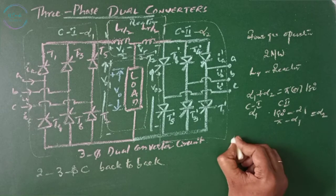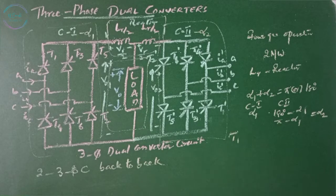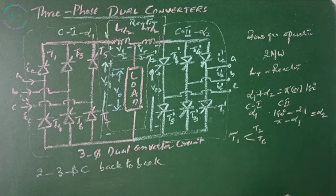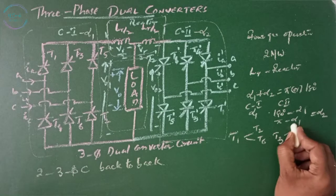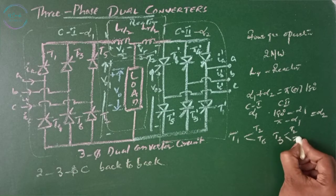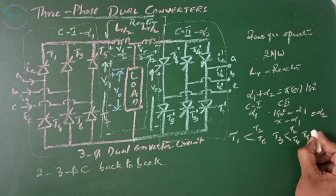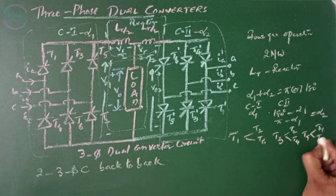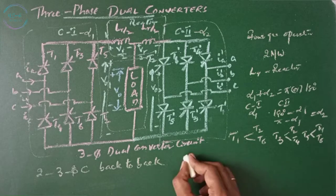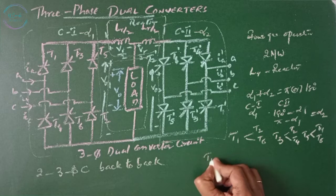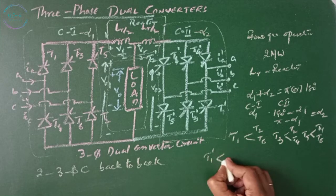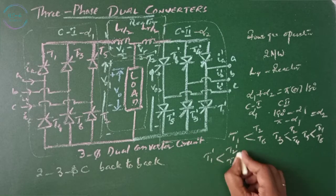When T1 is on in converter 1, T2 and T6 will come to operation so that current flows through the load. When T3 is on, T2 and T4 will come to conduction. When T5 is on, T4 and T6 will come to conduction. Similarly in converter 2, when T1 dash is on, T2 dash and T6 dash will conduct.